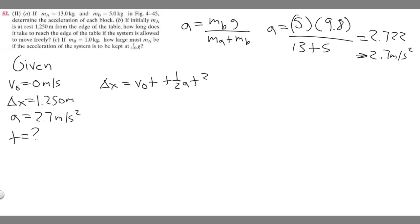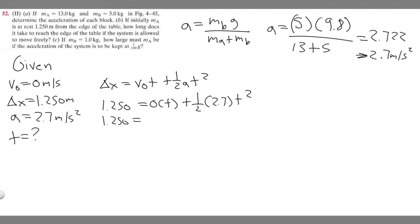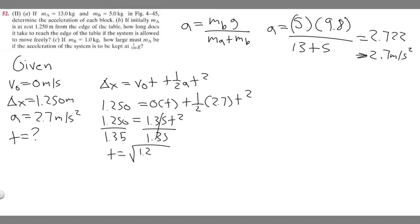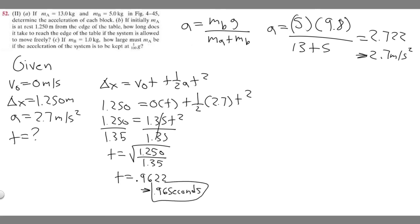Delta x is 1.250, which equals v sub zero — zero times t — plus one half times a, which is 2.7, times t squared. So 1.250 equals zero plus 1.35 times t squared. Dividing both sides by 1.35 and taking the square root, t equals the square root of 1.250 over 1.35, which gives 0.9622, or about 0.96 seconds. This is your answer for part b.